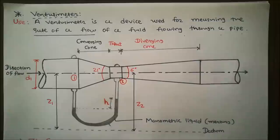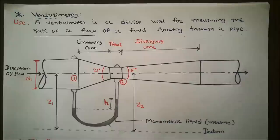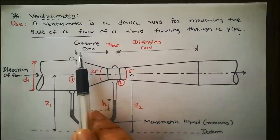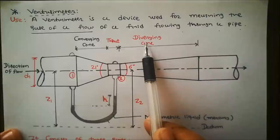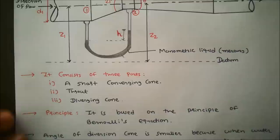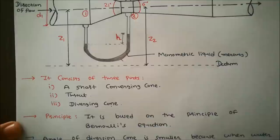As shown in figure, there is one Venturimeter fitted in a horizontal pipe through which a fluid is flowing. Venturimeter consists basically three parts: a short converging cone, throat, and diverging cone.